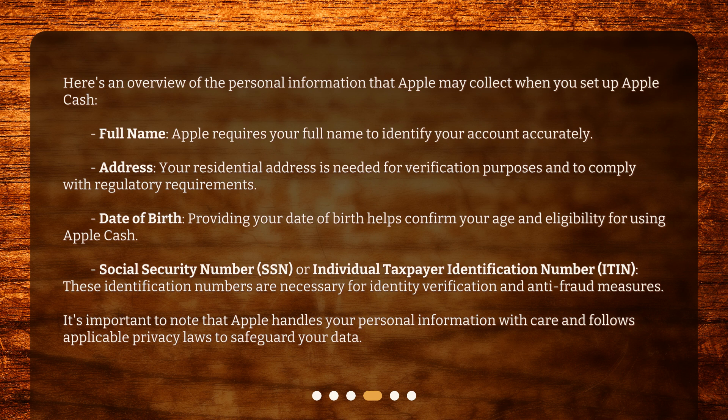Here's an overview of the personal information that Apple may collect when you set up Apple Cash: full name, to identify your account accurately; residential address, for verification and regulatory compliance; date of birth, to confirm your age and eligibility; and Social Security Number (SSN) or Individual Taxpayer Identification Number (ITIN), necessary for identity verification and anti-fraud measures.